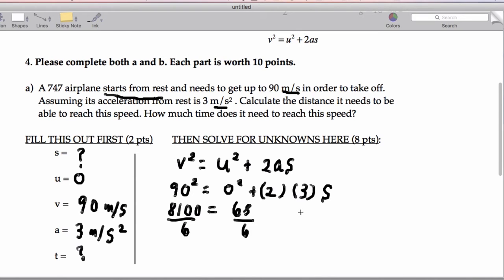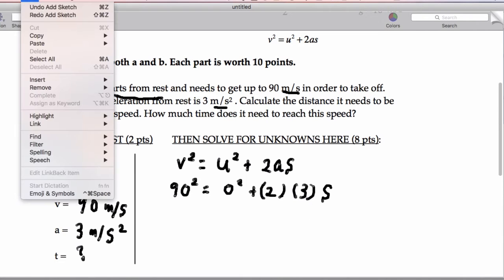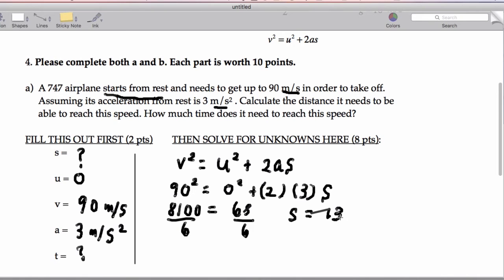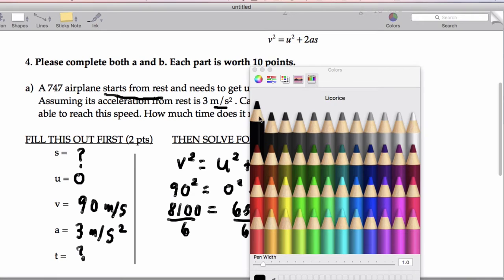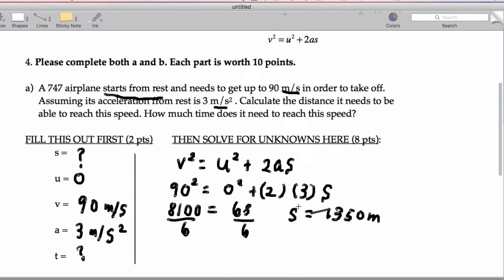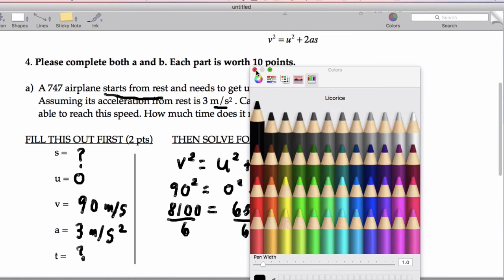When we divide both sides by 6 we're going to end up getting a distance of 30—whoops, we're going to end up getting a distance of 1350 meters. I just want to clean this up a little bit so we can read it a little bit better. So that's 1350 meters, awesome.